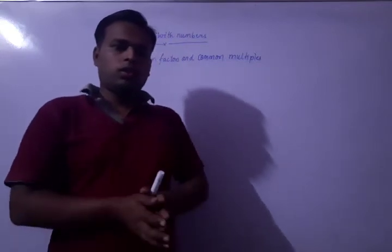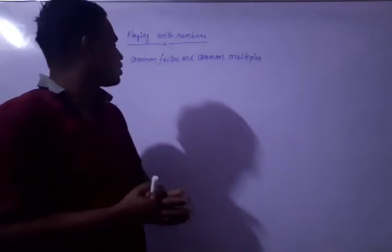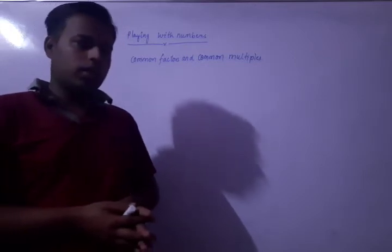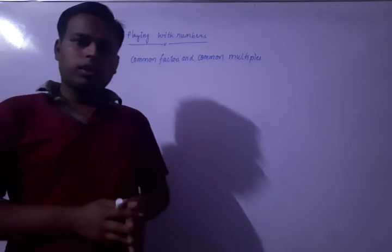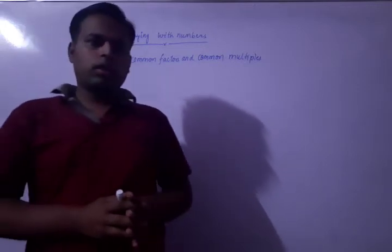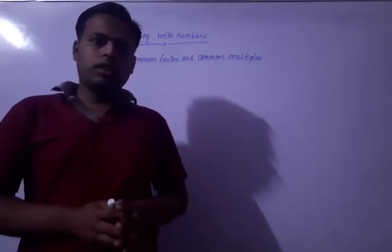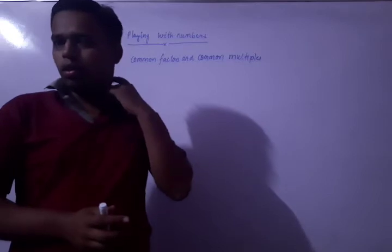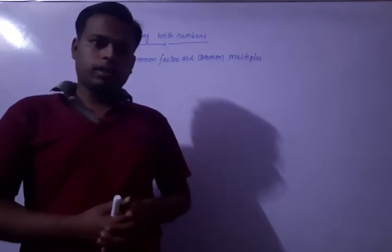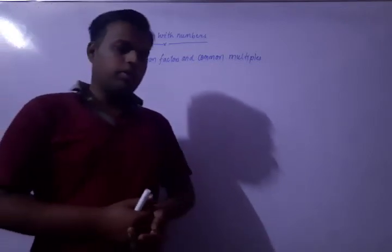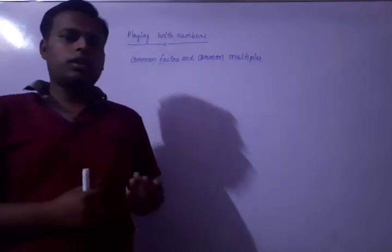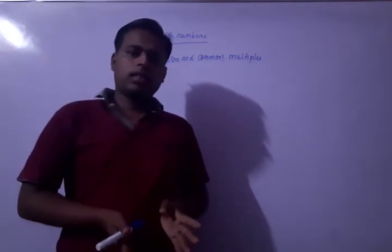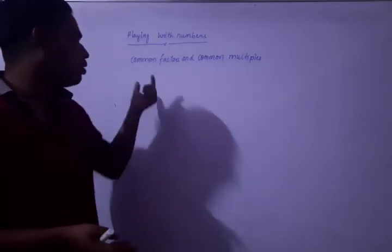Good morning, students. Today we are going to discuss the chapter 'Playing with Numbers.' In this chapter, we have studied factors, multiples, prime numbers, composite numbers, and the divisibility test of a number. In divisibility tests, we have seen the test of 2, 3, 4, 5, 6, 8, 9, 10, and 11. We have not seen the divisibility test of 7; we will see that in higher classes because it is a little bit different. Today, our discussion topic is common factors and common multiples.